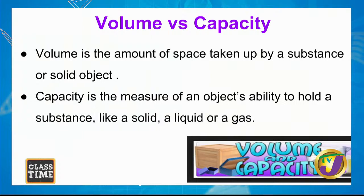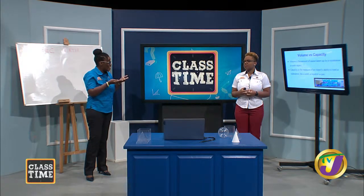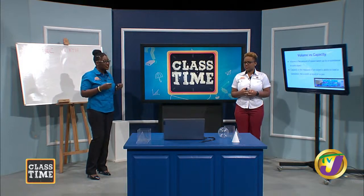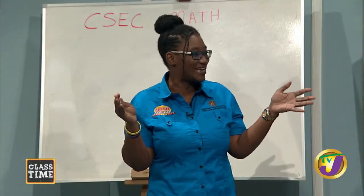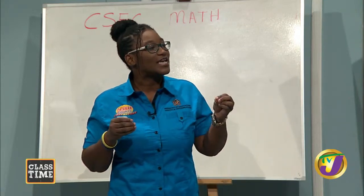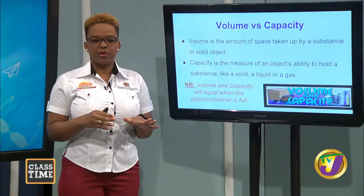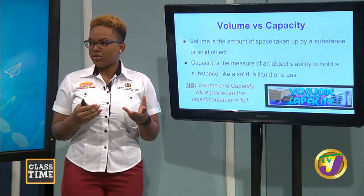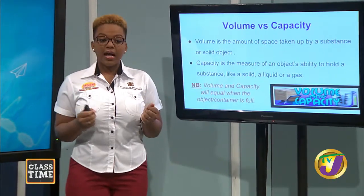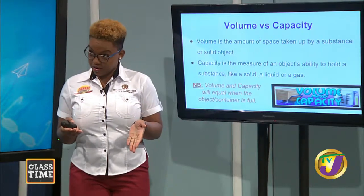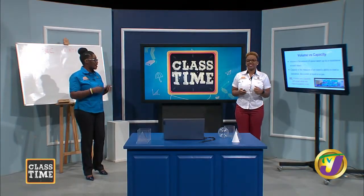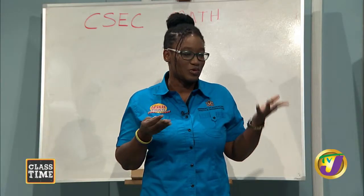When we talk about capacity, we're thinking of something like a container — it has a cavity that can hold something. There is a point when the volume and the capacity are actually equivalent, because if I fill a container to the brim, it would have been filled to capacity. So the capacity is how much it can hold, and the volume is how much space is taken up — they can be equal when it's full to the brim.